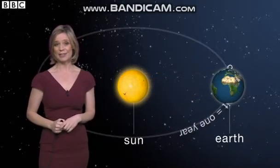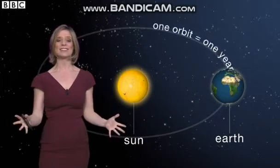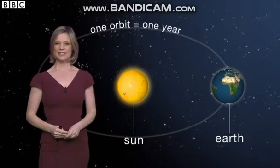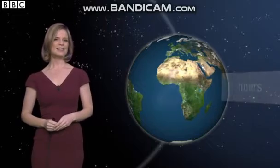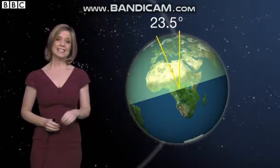It takes a year for the Earth to orbit the Sun, and as it does so, it spins on its own axis, one revolution being a day. However, the Earth is tilted by 23.5 degrees in relation to its plane of orbit, and it's that tilt which gives rise to the seasons.